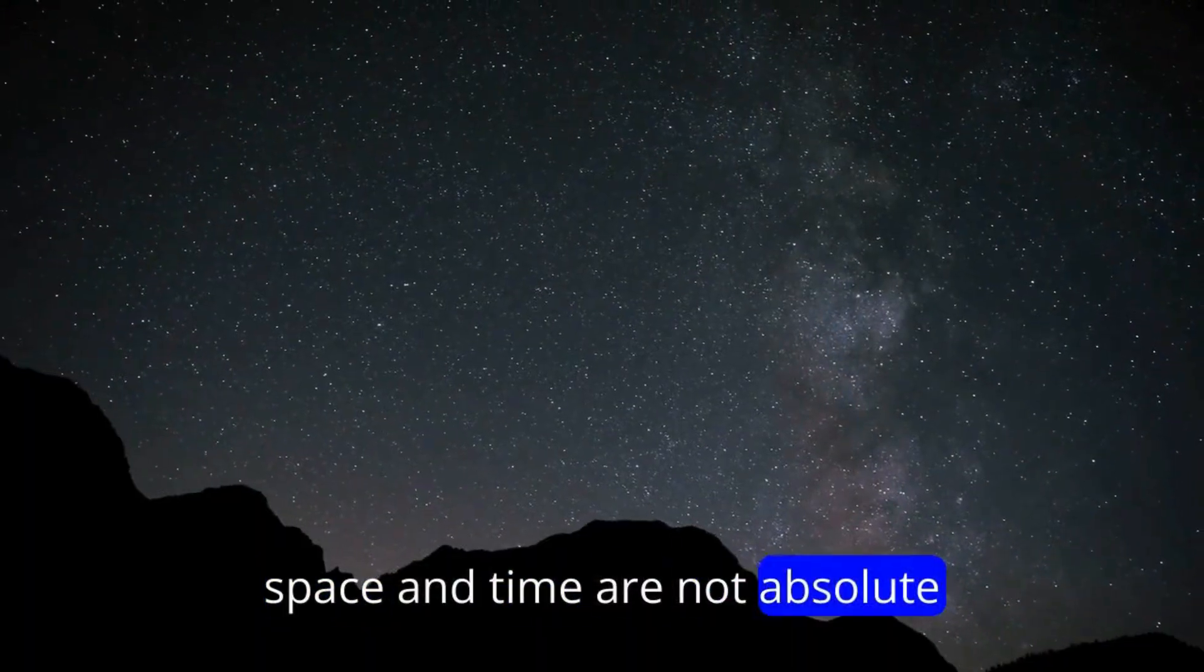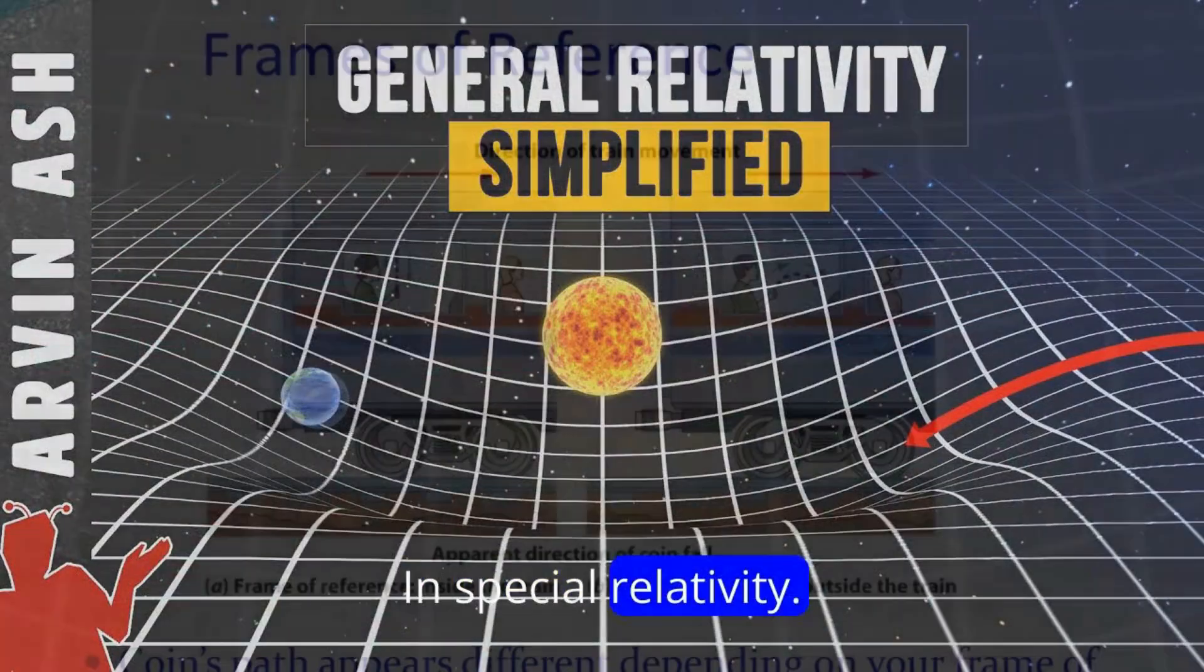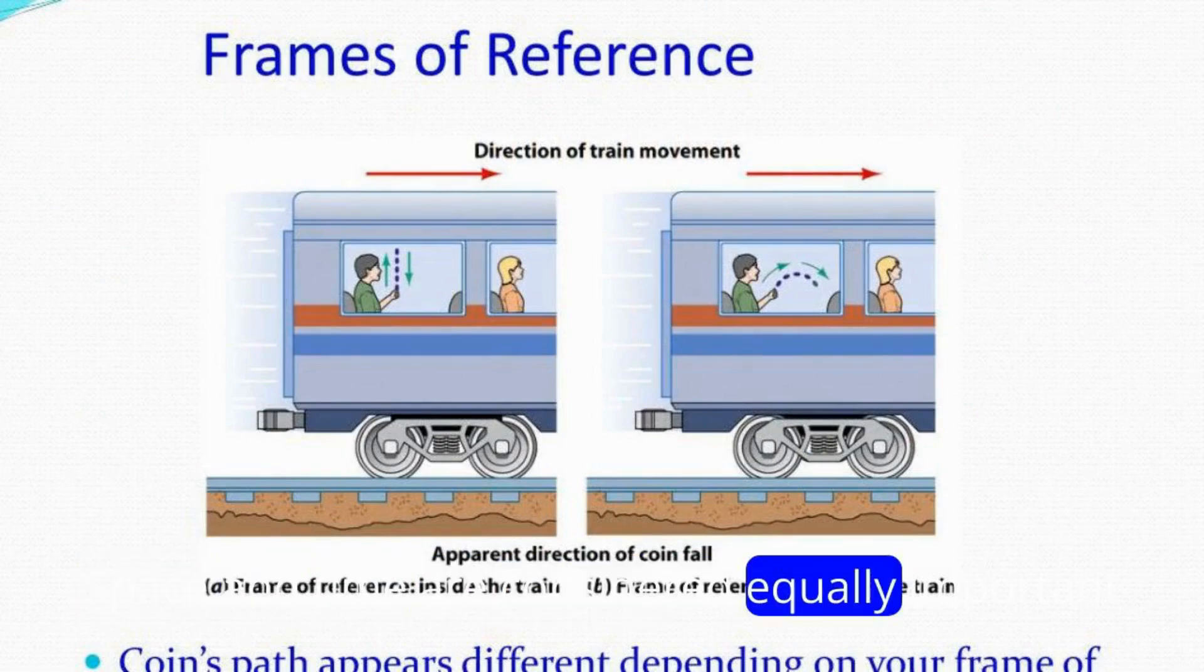Space and time are not absolute, but rather depend on the observer's frame of reference. In special relativity, space and time are considered equally important, with no absolute distinction between them.